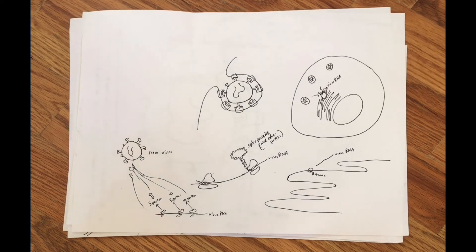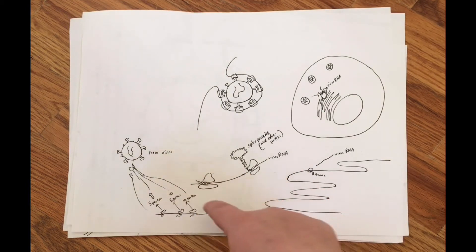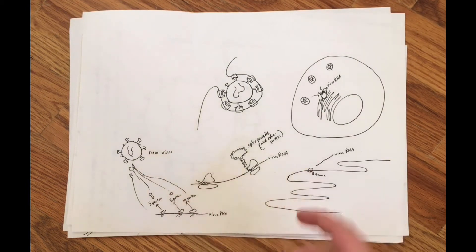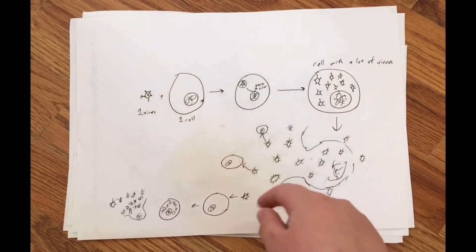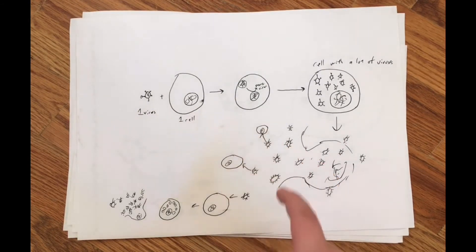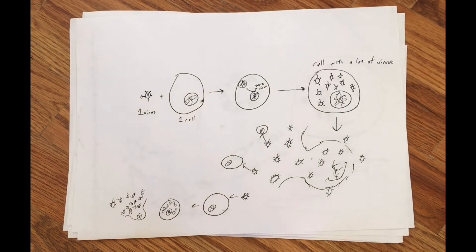Your body doesn't know because it thinks it's just the messenger RNA, so it keeps making different parts to make new viruses. Then all these parts come together to make a new virus, and one virus makes two viruses, two makes four, then eight, and so on — a bunch of viruses get into all of your cells and make your body produce a bunch of new coronaviruses.